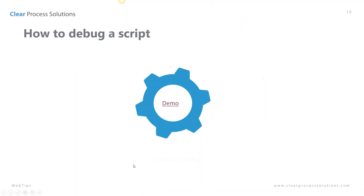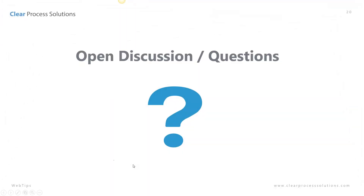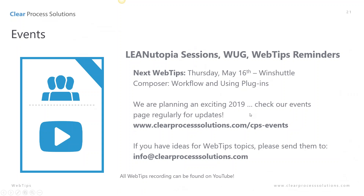We'll check that off our screen and then it'll come back to Studio and provide our log column — telling us that we actually posted this item in company code 1000 and what our document number is. Back to the presentation — that was the demo for today. Kent, did we have any questions? No questions have come in.